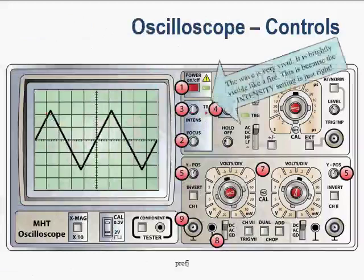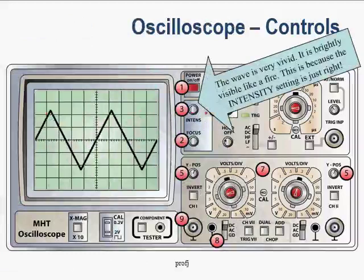Another key control on the oscilloscope is the intensity knob. You will note that this triangular wave is very bright, just very bright like a fire. This is because the intensity setting has been set correctly.